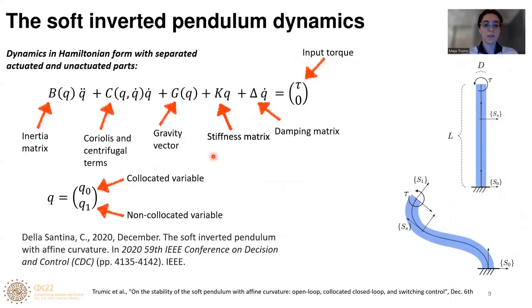Here we see dynamics of this soft pendulum written in the Hamiltonian form with separated actuated and unactuated parts. Our collocated variable is q0, which means that it is directly actuated by the input tau, while the non-collocated variable is q1. For more details about the derivation of this dynamic model, I advise you to check the recent paper of Cosimo.